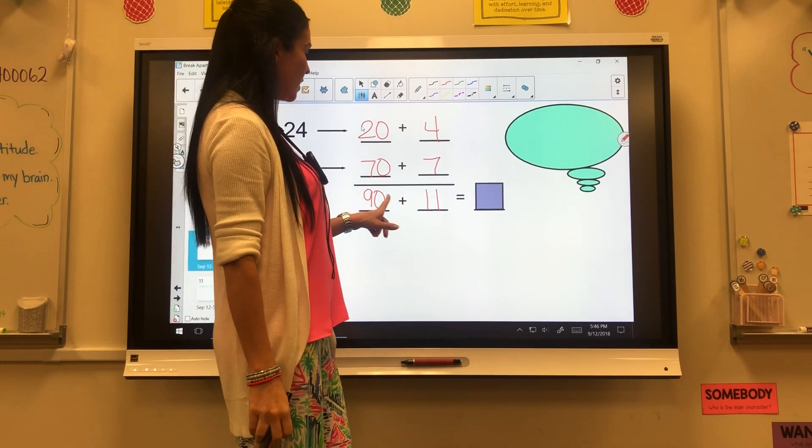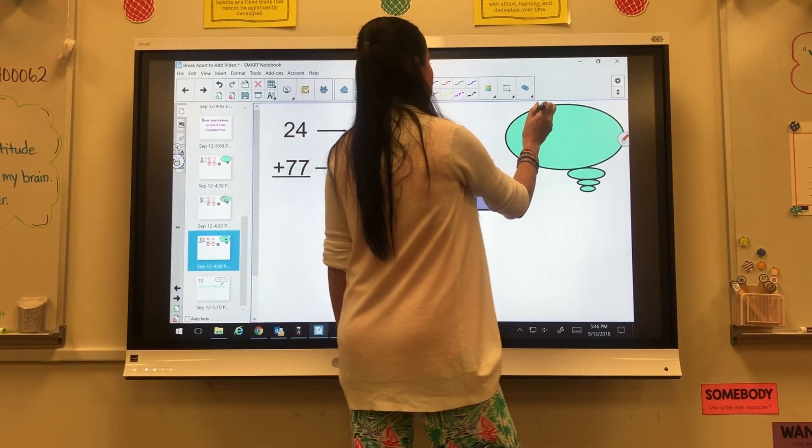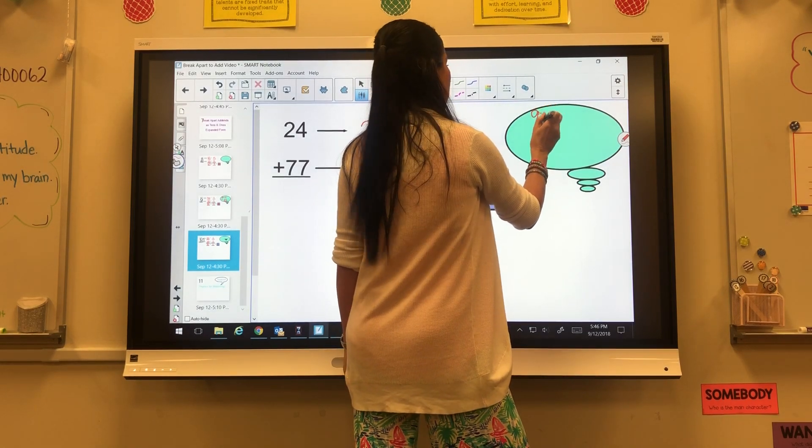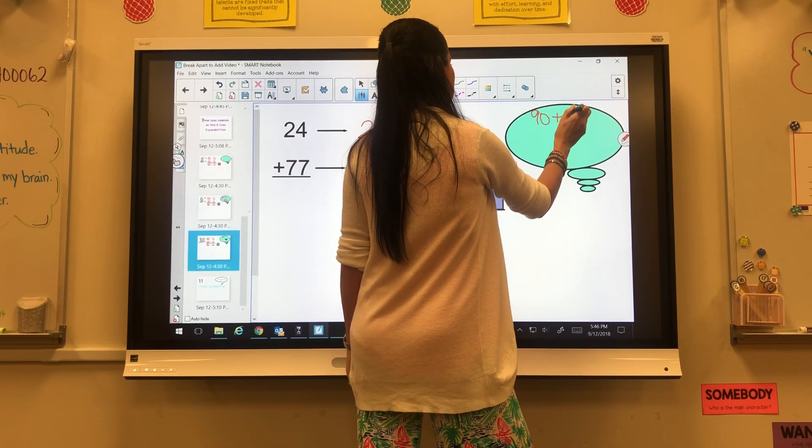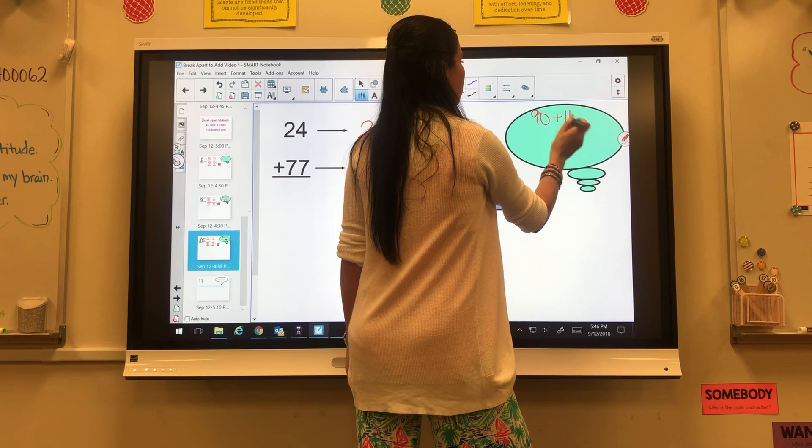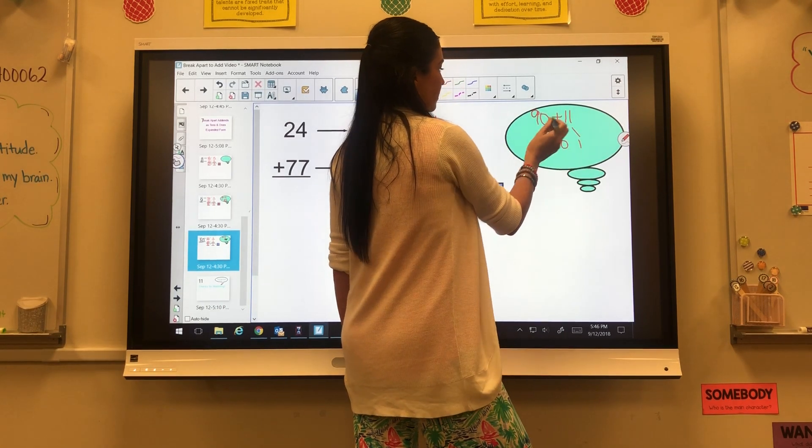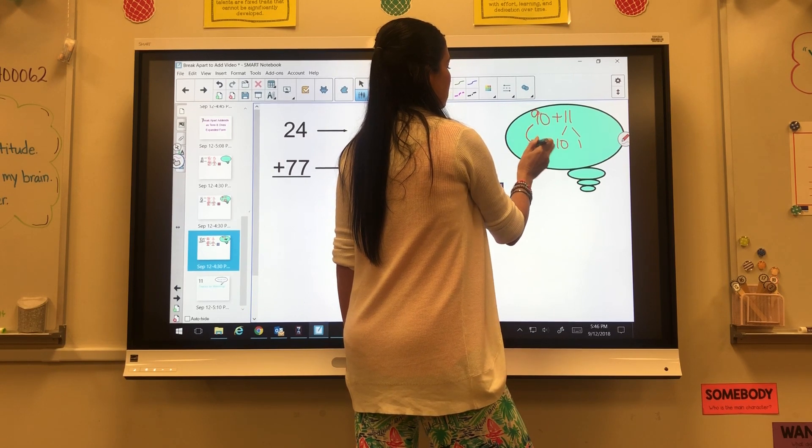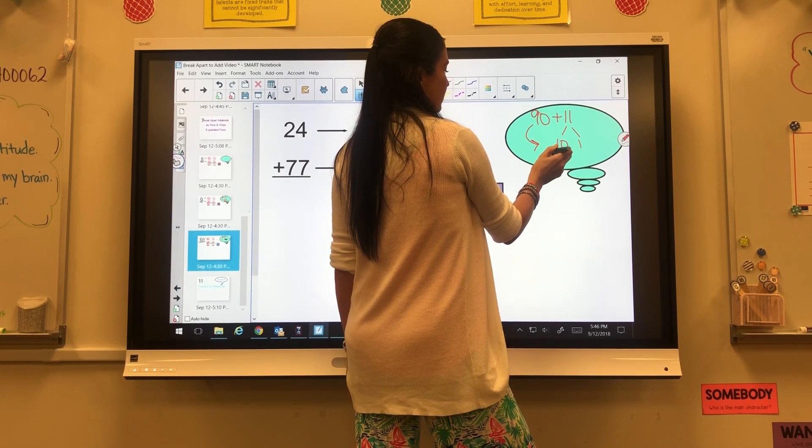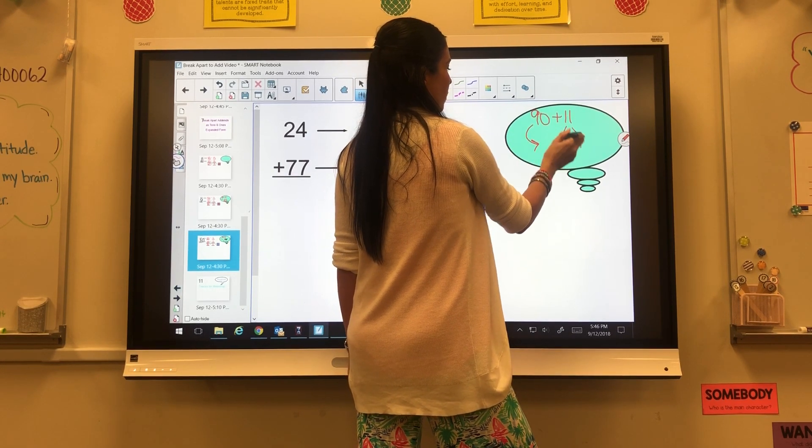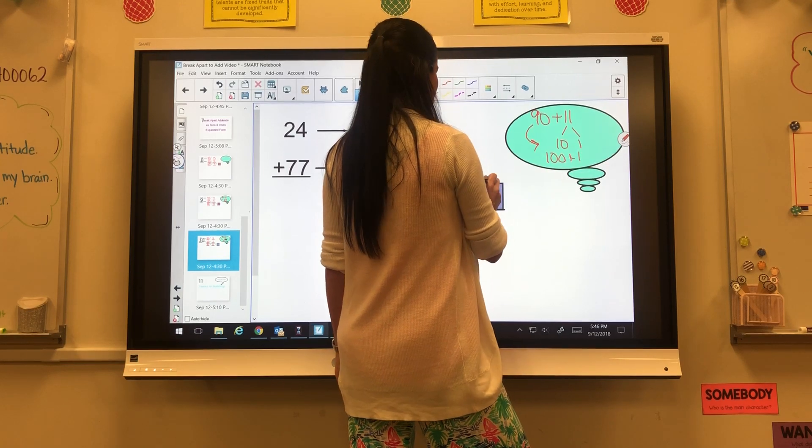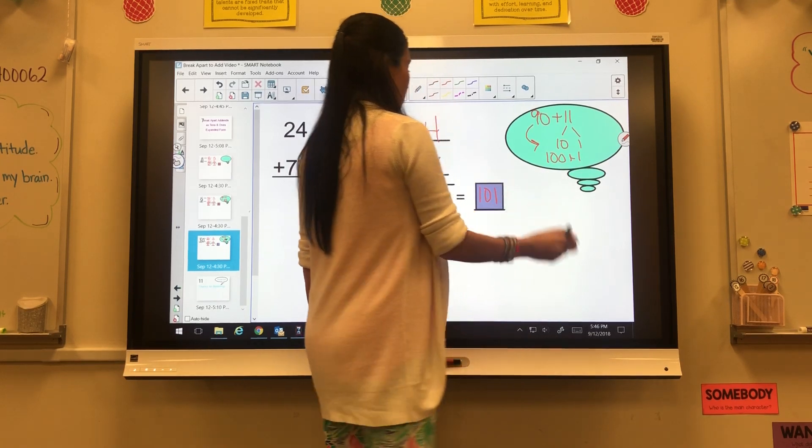Now with the last one, I can see that I have a 10 in here, so I want to take that out. So I have 90 plus 11. In my 11, I have one 10 and one 1. So if I do the 90 plus the 10, that gives me 100 plus 1, and my answer is 101.